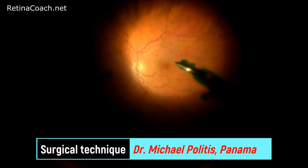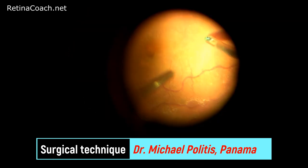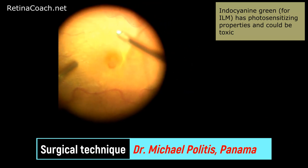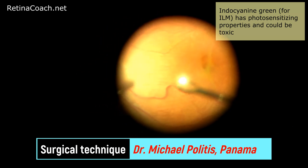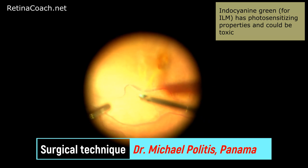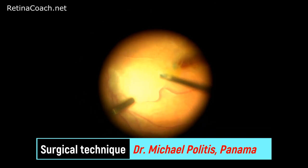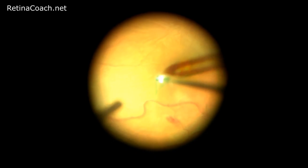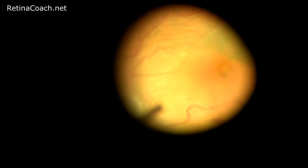The second dye available for identification of the internal limiting membrane is Indocyanine Green. In contrast to Brilliant Blue dye, ICG has photosensitizing properties and can be toxic to the retina. It is important to use the lowest possible concentration, but lower concentration provides less staining. In the case shown now, the surgeon injected ICG and first removed the epiretinal membrane. You can see that the epiretinal membrane did not stain at all, while at the same time the internal limiting membrane had a characteristic green color after staining.